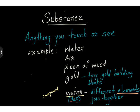Water is an example of a compound because it's composed of more than one type of element. The chemical symbol of gold is AU. Gold is an element because it is made up of only one type of atom.